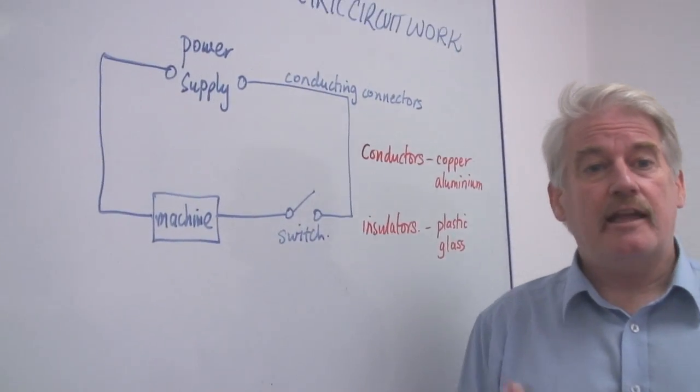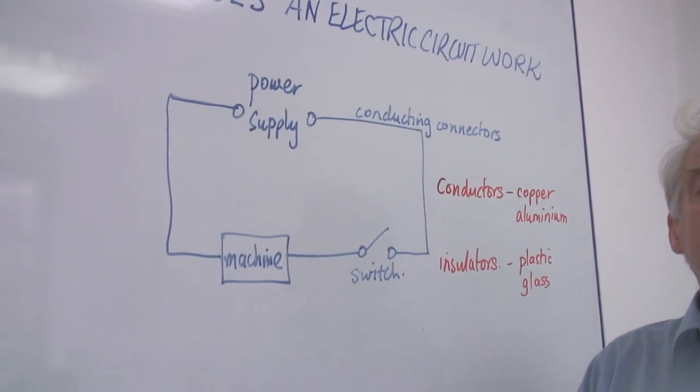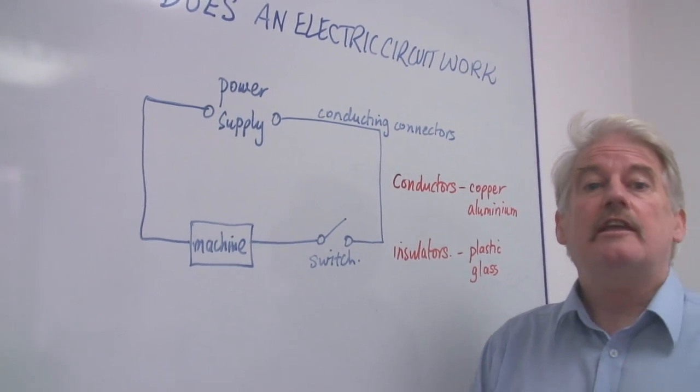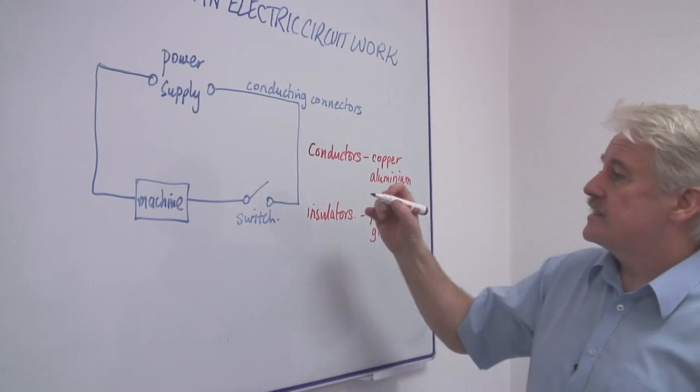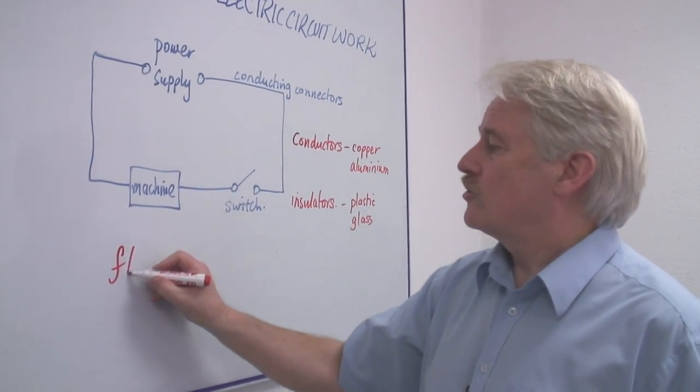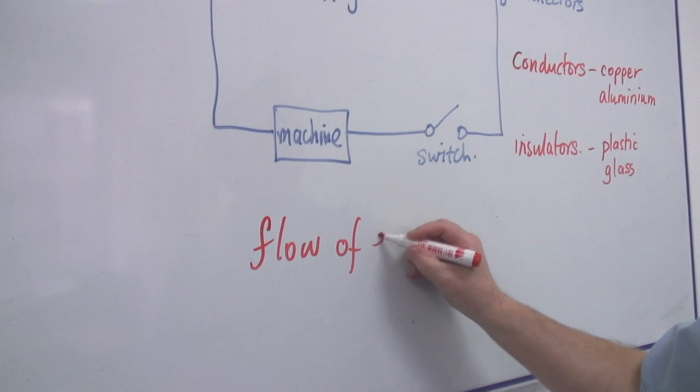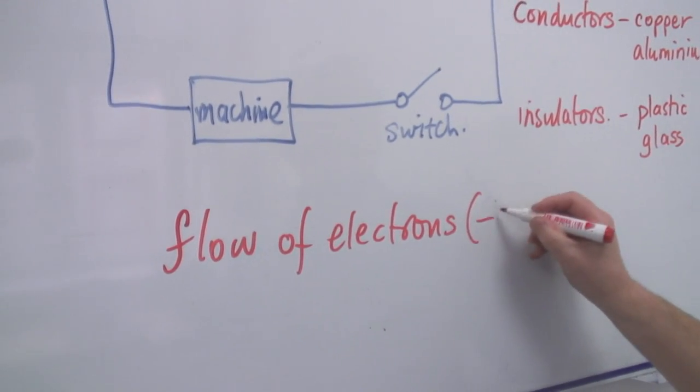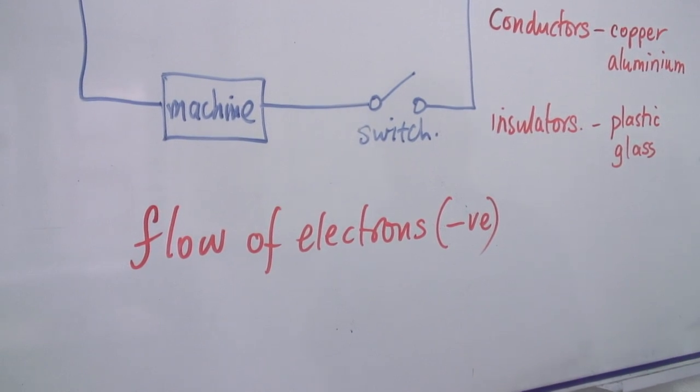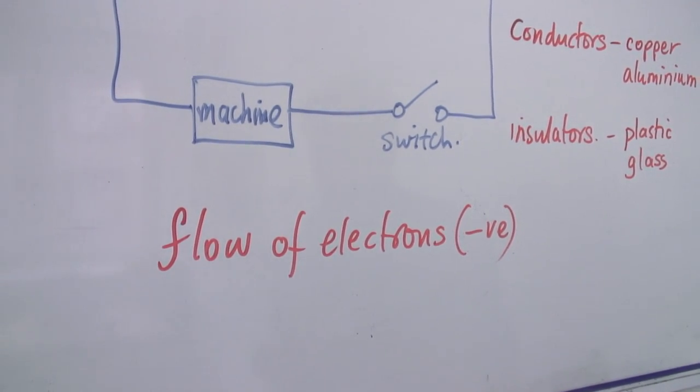A power supply is the thing which gives energy to the electric current. The electric current is a flow of electrons. It's a flow of little particles called electrons, which are negatively charged. And these flow around the circuit.